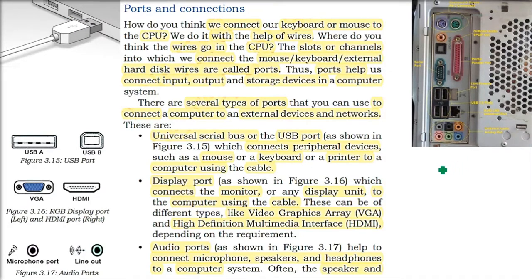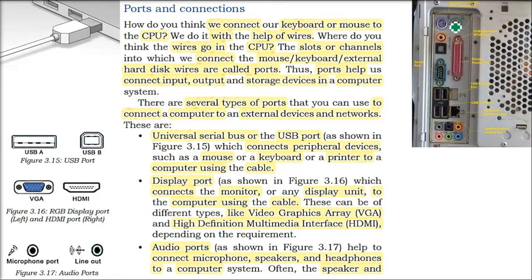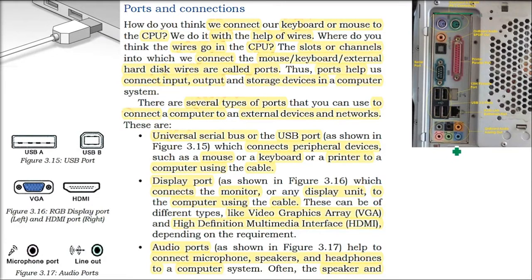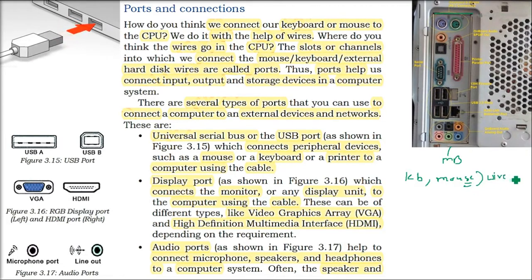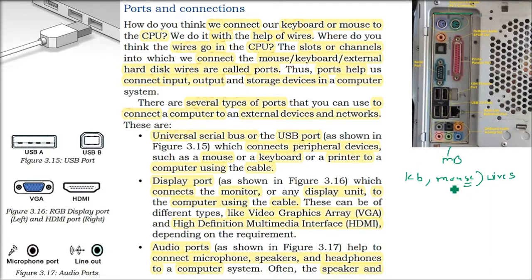A motherboard is where you can input and output, and it connects different ports. The motherboard has those ports. This is the back of a CPU — basically it's a motherboard inside, and it has all these jacks and ports. So if you want to connect a keyboard, you connect it into the motherboard. For a mouse, you can use a PS2 connection, wired, wireless, or USB. Wherever you can plug something in on the computer, those are the ports.